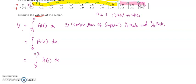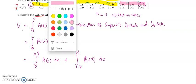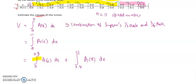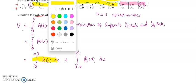And then plus the integration of A(x)dx, from 0.8 until the upper limit of the integration, 1.1. So for the first integration, you must use the 1/3 rule, and the second integration, you must use the 3/8 rule.